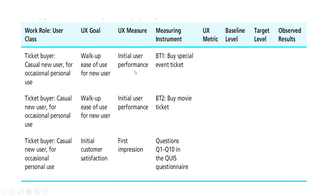In the example, the UX goal is ease of use for new user, and UX measure is initial performance. Since this is objective, we give a task to the user: buy a special event ticket — for example, football or a live concert. BT1 stands for benchmark task 1. For the second task, BT2, the UX measure is also initial performance, and the task is to buy a movie ticket. For first impression, which is a subjective UX measure, questionnaires are used as the measuring instrument.